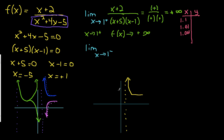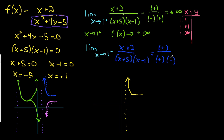Now, as it comes from the left side of this dotted line, I pick a number a little less than 1 — I'll try 0.9 — and do the same process. Plugging 0.9 in: 0.9 + 2 is positive; 0.9 + 5 is positive; but 0.9 − 1 is negative. So we have positive divided by positive times negative, which is positive over negative — negative overall. Our value is going to approach negative infinity, so from the left side we're approaching negative infinity.